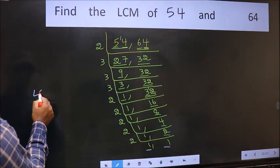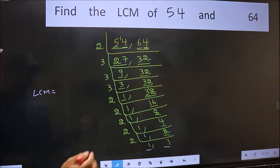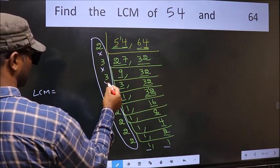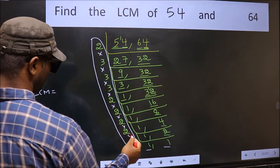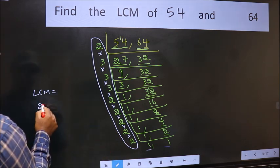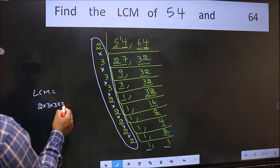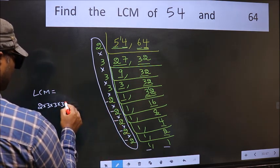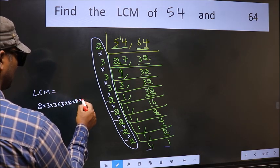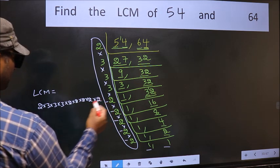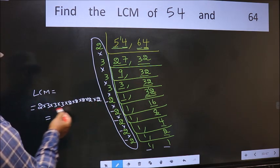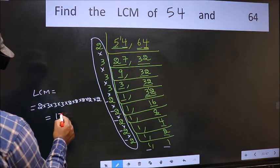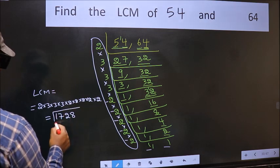So our LCM is the product of all these numbers: 2 × 3 × 3 × 3 × 3. How many times do we have 2? 1, 2, 3, 4, 5 — so times 2 × 2 × 2 × 2 × 2 × 2. When we multiply these numbers together we get 1728. So 1728 is our LCM.